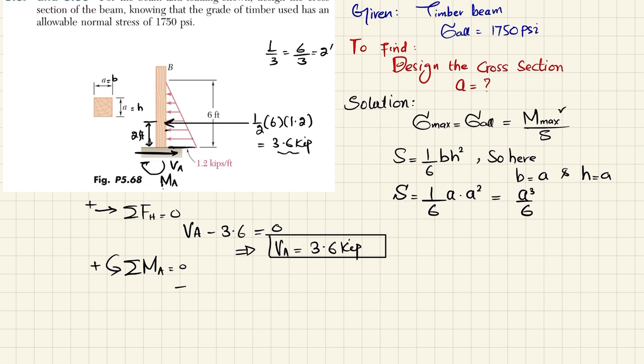moment which is clockwise, so minus MA, and moment due to this load which is 3.6 and perpendicular distance is 2, so this is counterclockwise, so 3.6 into 2 is equal to 0. So from here you will get moment about point A, which is the